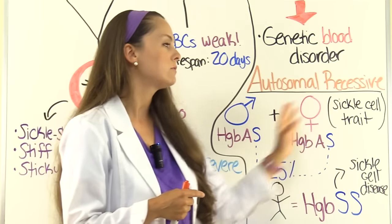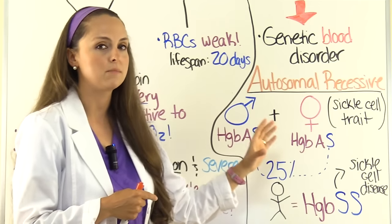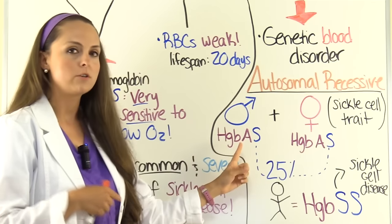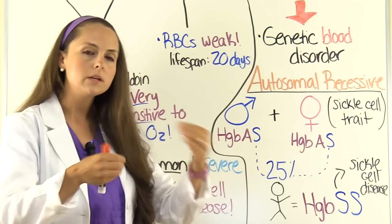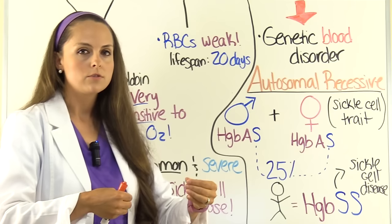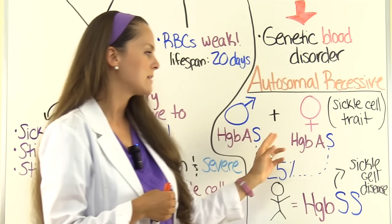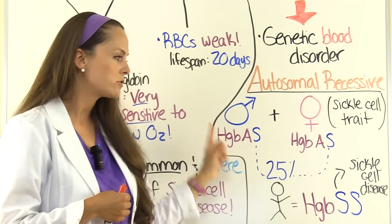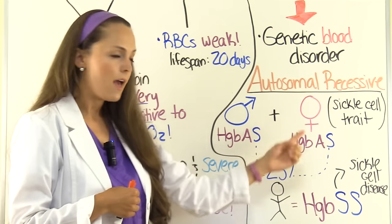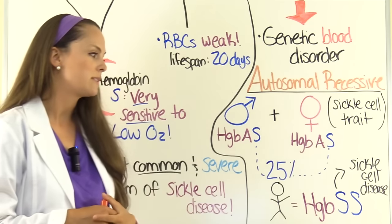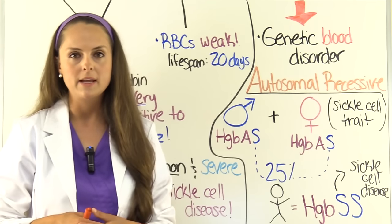In a scenario where father and mother both have sickle cell trait, they carry the disease but don't necessarily show signs and symptoms because they have hemoglobin AS — just enough normal hemoglobin A to prevent red blood cells from sickling. When two AS carriers have a child, there's a 25% chance of passing each hemoglobin S gene to that child, giving them sickle cell disease.